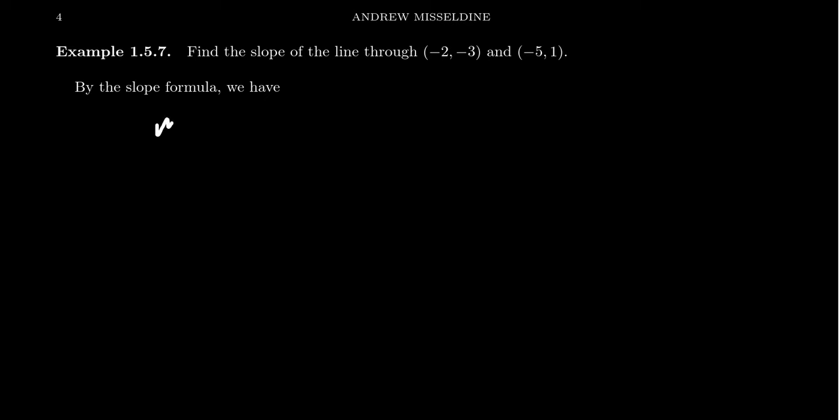So to find the slope of the line, we're going to take M equals y2 minus y1 over x2 minus x1. Just the formula we have from the previous slide. Now we have to make a decision who's going to be the first point, who's going to be the second point. And it turns out it doesn't matter who the first point is, or who the second point is, you could specify any one.